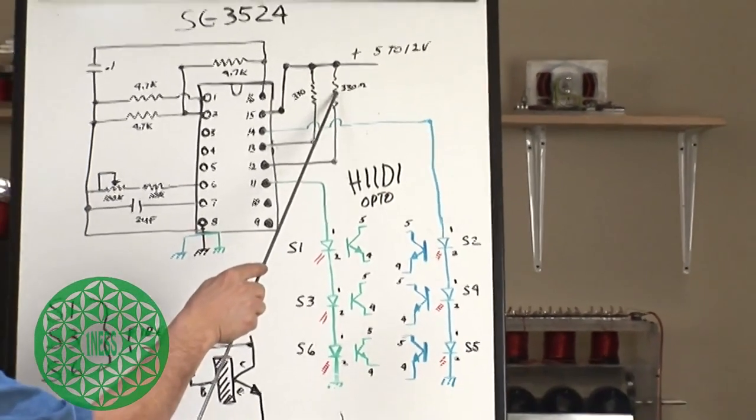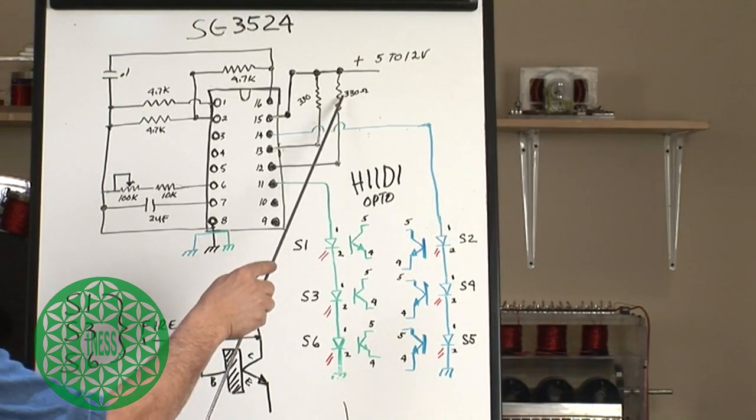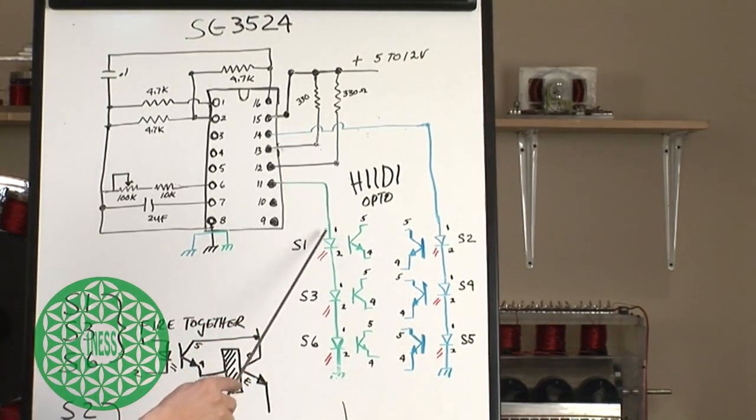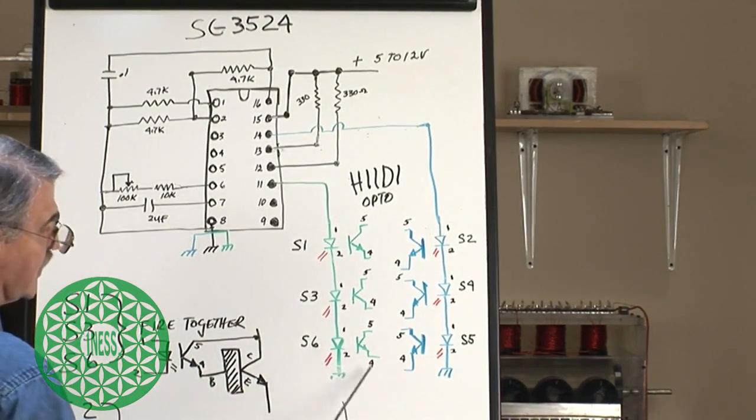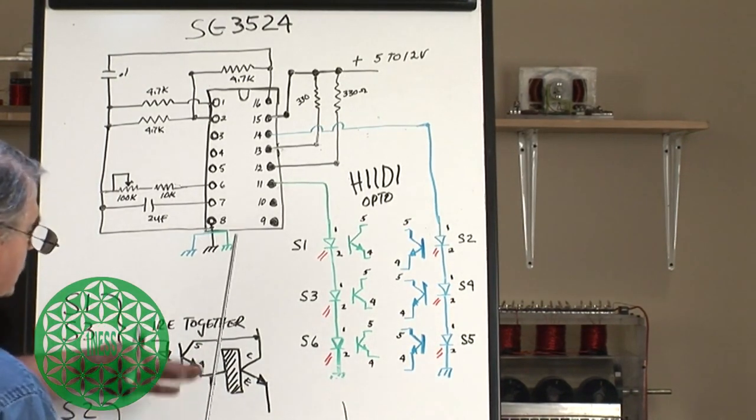You don't want to go too much on these because you don't want to put too much current in these diodes and have them not work, and then you'll have no opto coupler, so the switch won't work right.